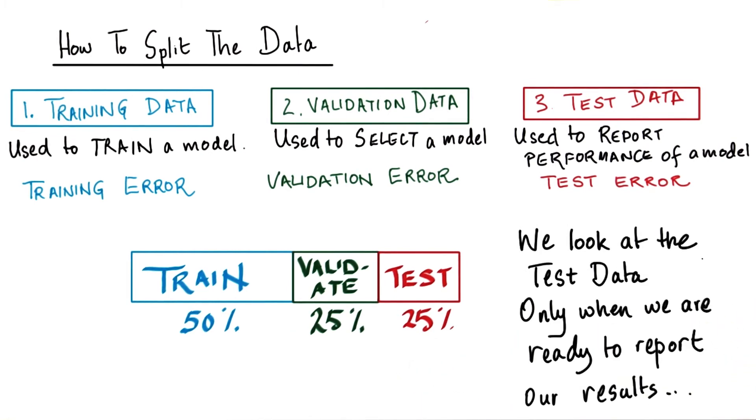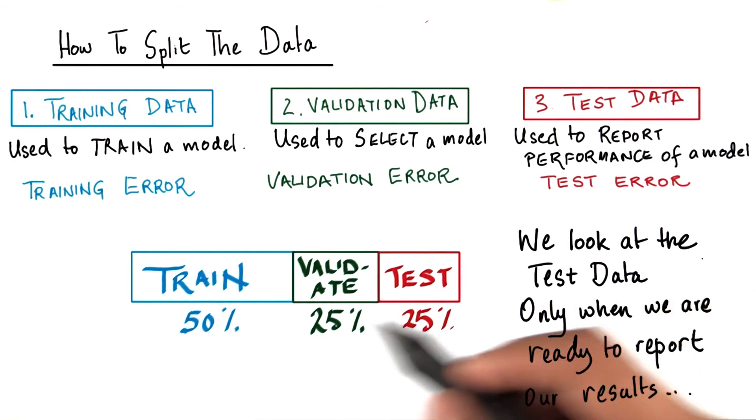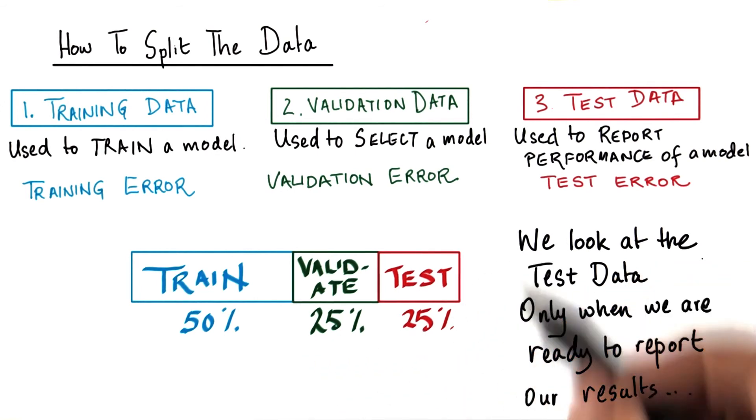More specifically, when we are building the model, we do not examine the test data at all. This is to avoid biasing our results on the test set. This is an essential part of the validation process.